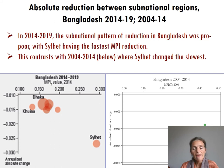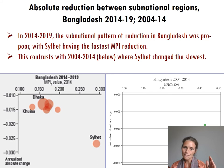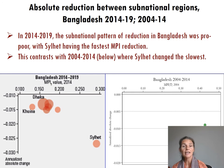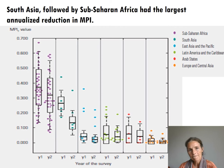We can also look at subnational regions. The left panel shows reductions by region in Bangladesh. Sylhet, the poorest region, reduced poverty the fastest — a change from the decade 2004–2014, when Sylhet was poorest but not fastest. That's something to celebrate. Across the 625 regions covered in this year's changes over time, 398 regions — home to about three-quarters of the population — had statistically significant MPI reductions, and 45 reduced poverty in every indicator.